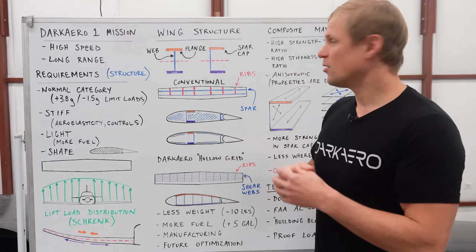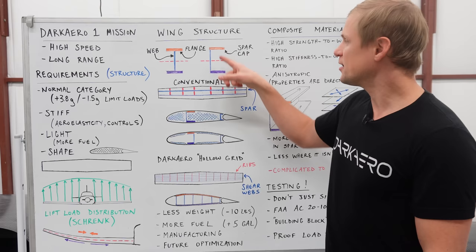When we build a spar in a wing, we'll refer to the top and bottom pieces of the spar as the spar caps instead of the flanges. The web here is still called the web or the shear web.